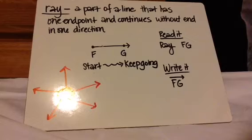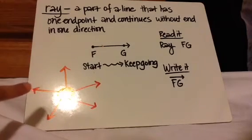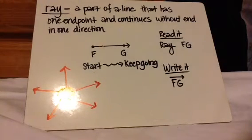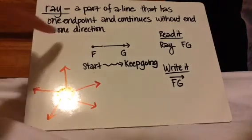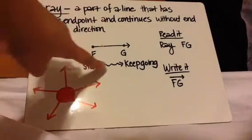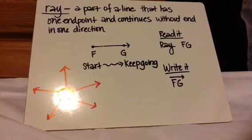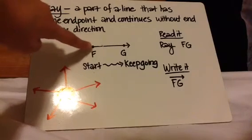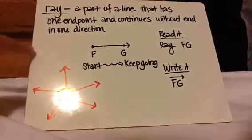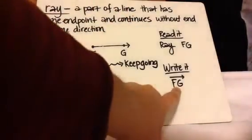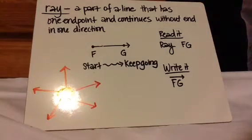This next one is called a ray — and note this is different from an array in multiplication. I always connect it to the rays of the sun, because it's a very long, forever-going line. The definition of a ray is it's a part of a line that has one endpoint and continues without end in one direction. This side has the arrow, so this is your starting point and you keep going. You can only read it one way: you start with the starting point and say ray FG. You cannot say ray GF. The way to write it is FG with a line and arrow on one side only.